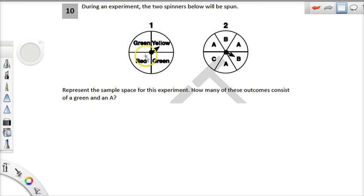So you could just start and list your sample space here. First one could be green, right? Maybe we'll start like here. So it could be green A if it landed there, green B over here, could be another green A, could be another green B.